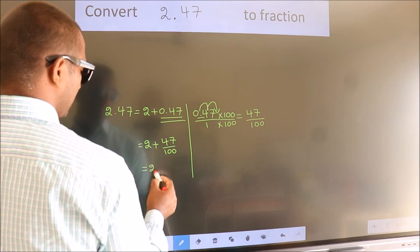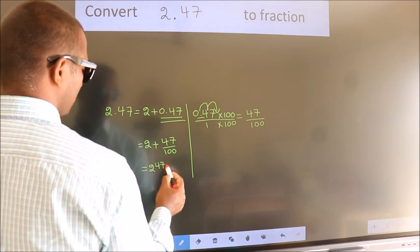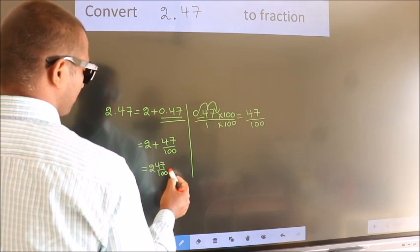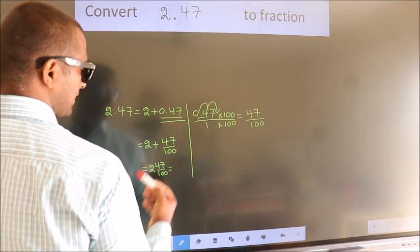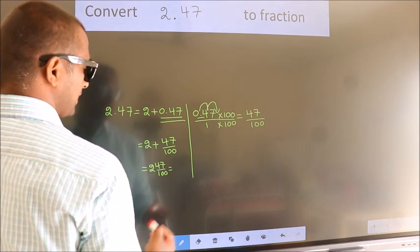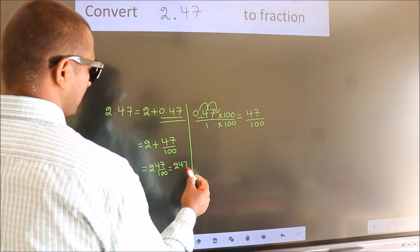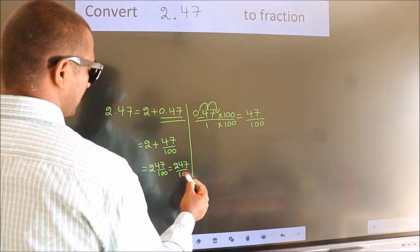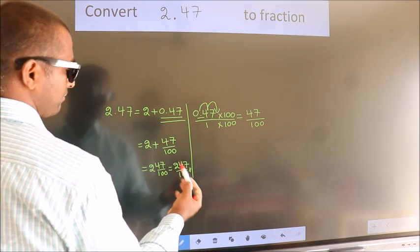In mixed fraction it is 2 and 47 over 100. And in improper fraction it is 2 into 100, which is 200 plus 47. So 247 by 100 is our fraction.